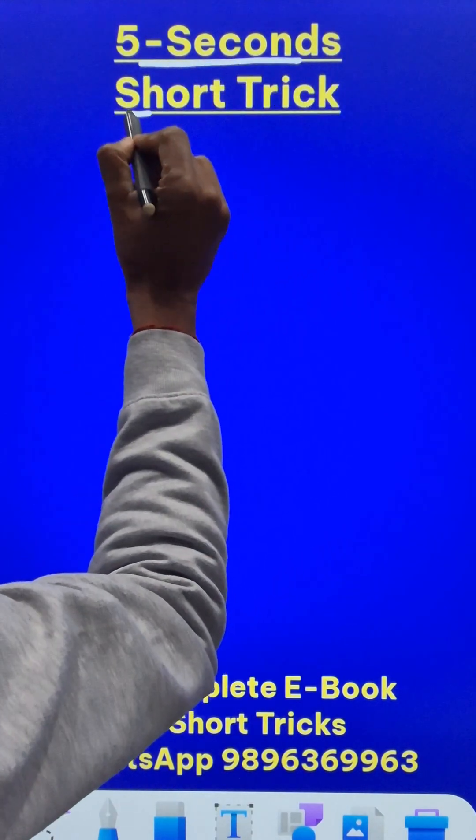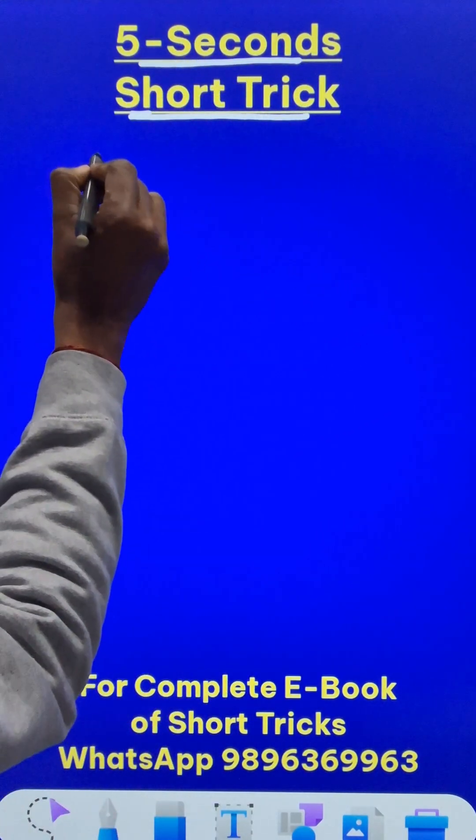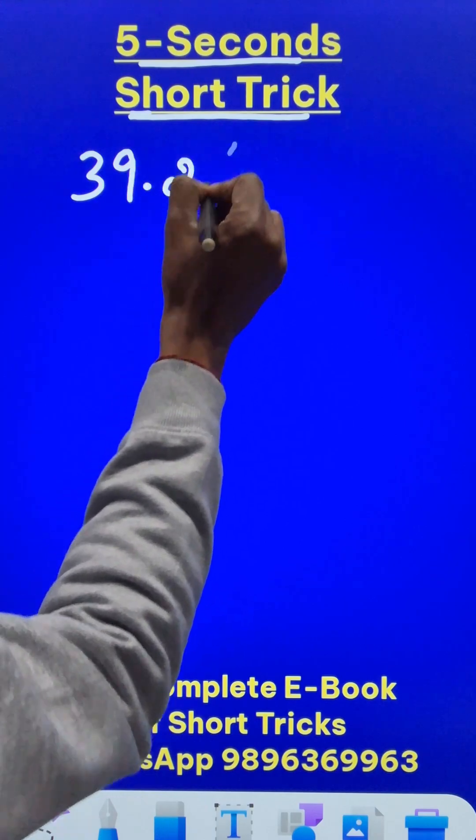Let us find percentage using a 5 seconds short trick. Suppose you have to do 39.2 percent of 40.2.